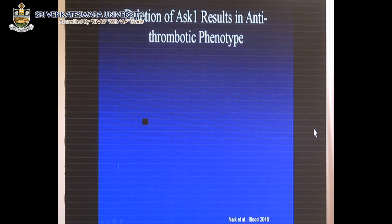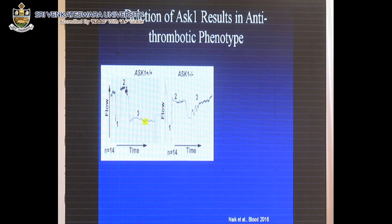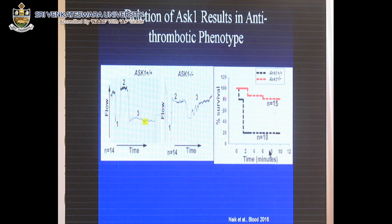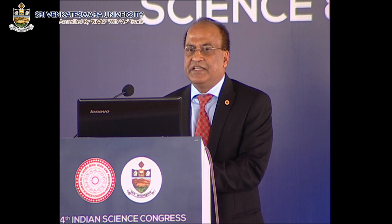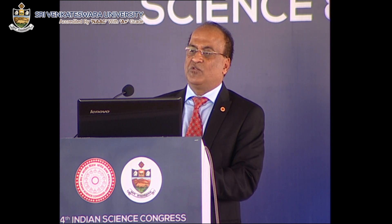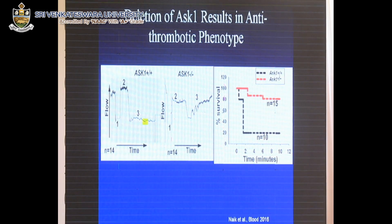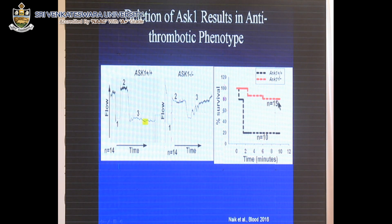We generated an ASK1 knockout mouse. Using ferric chloride injury, we again observed unstable thrombus formation, placing ASK1 downstream of CIB1. We also performed a thromboembolism assay, injecting collagen and epinephrine into mice: wild-type mice die within two minutes due to thrombus formation blocking the respiratory system in the lungs, whereas in ASK1 knockout mice, approximately 80% survive — confirming ASK1's involvement in thrombosis.